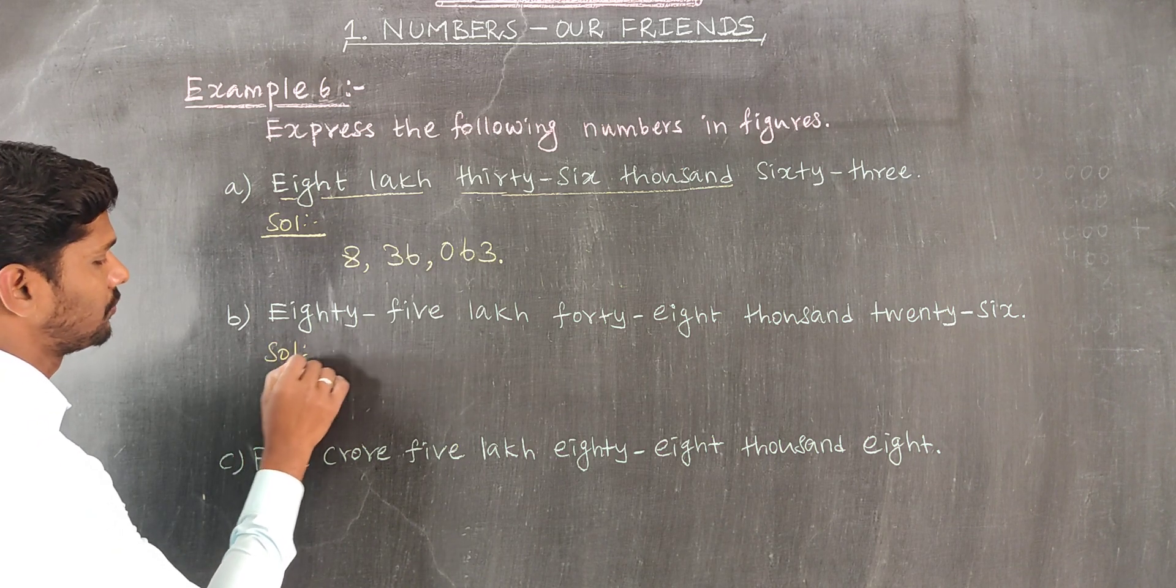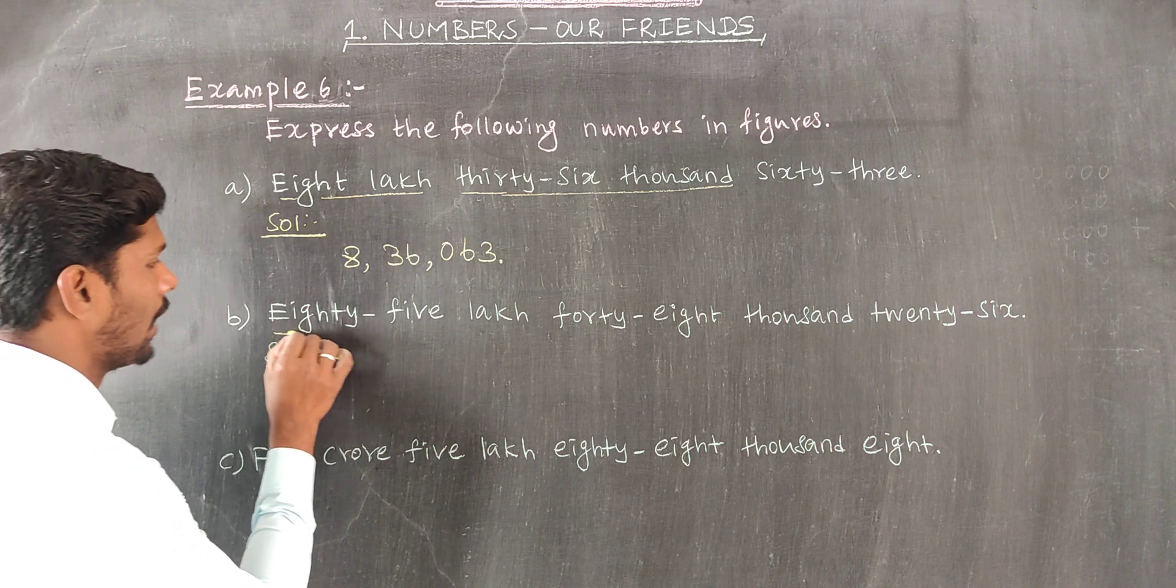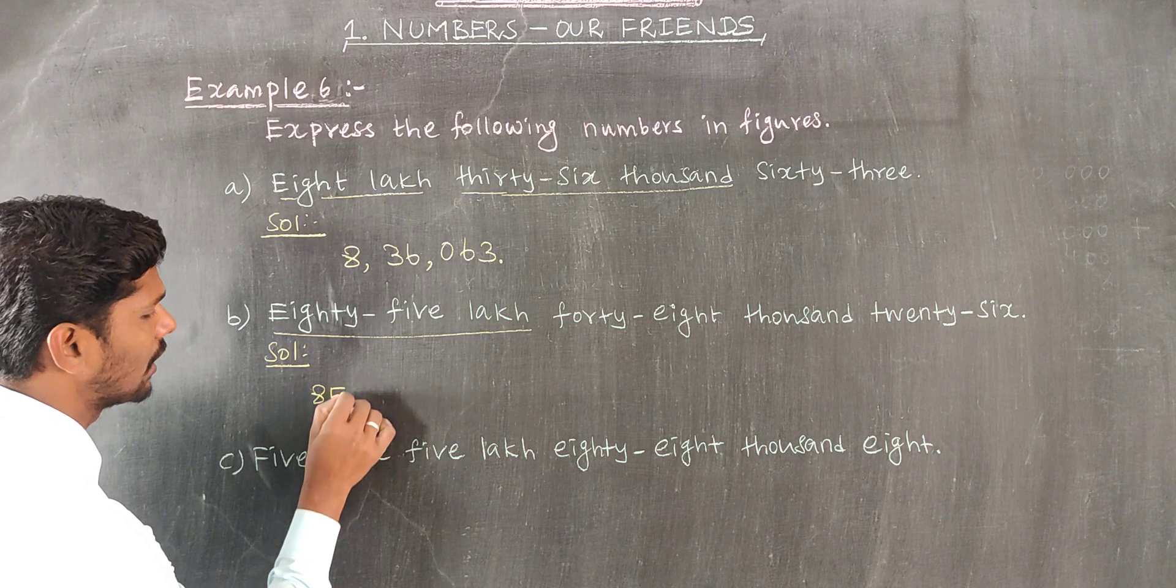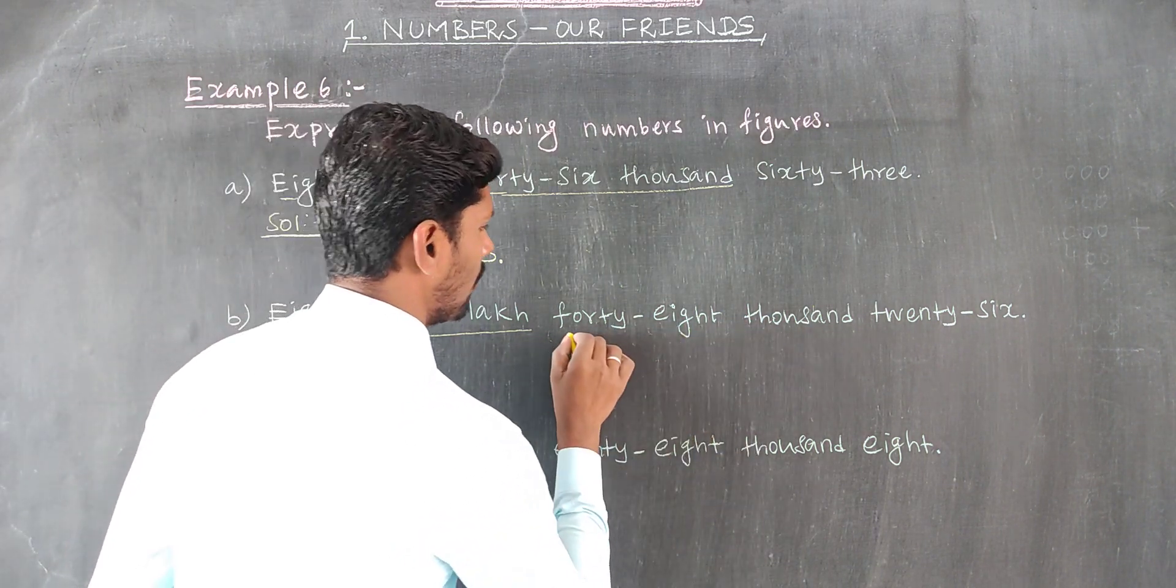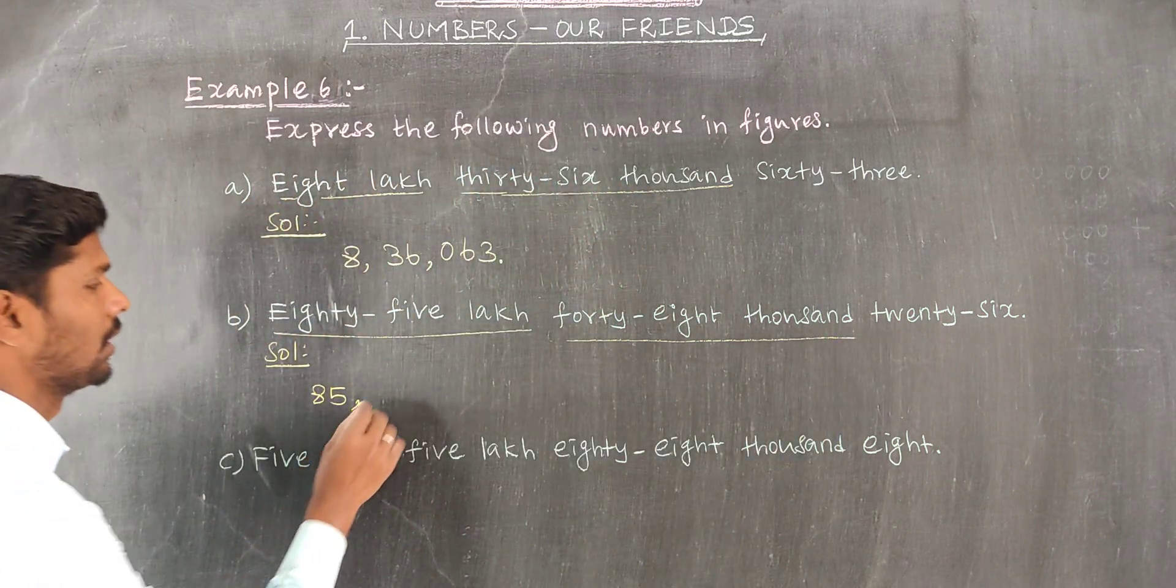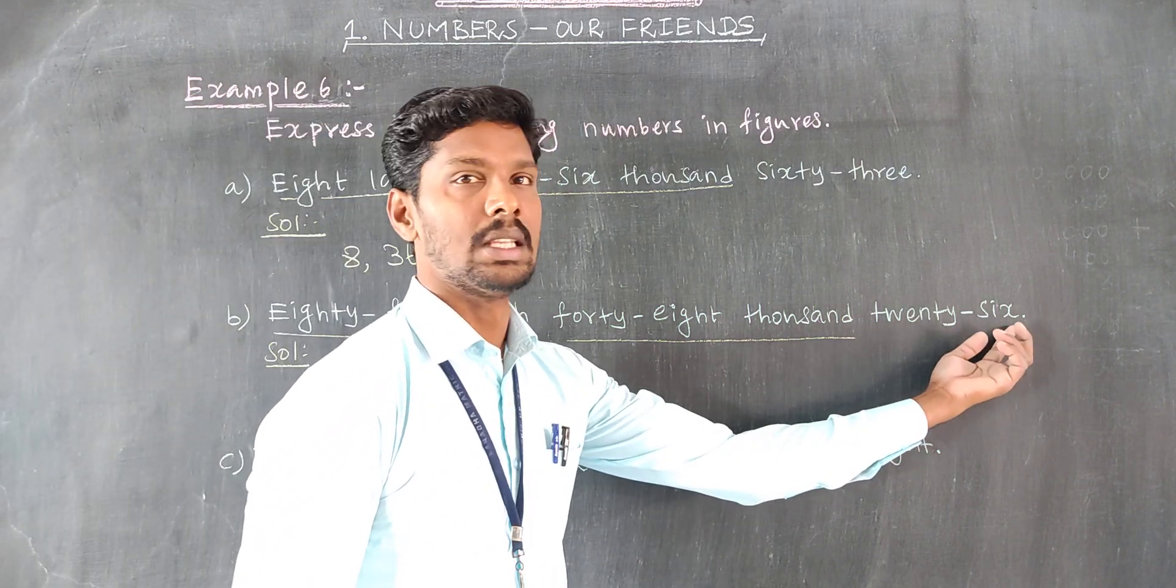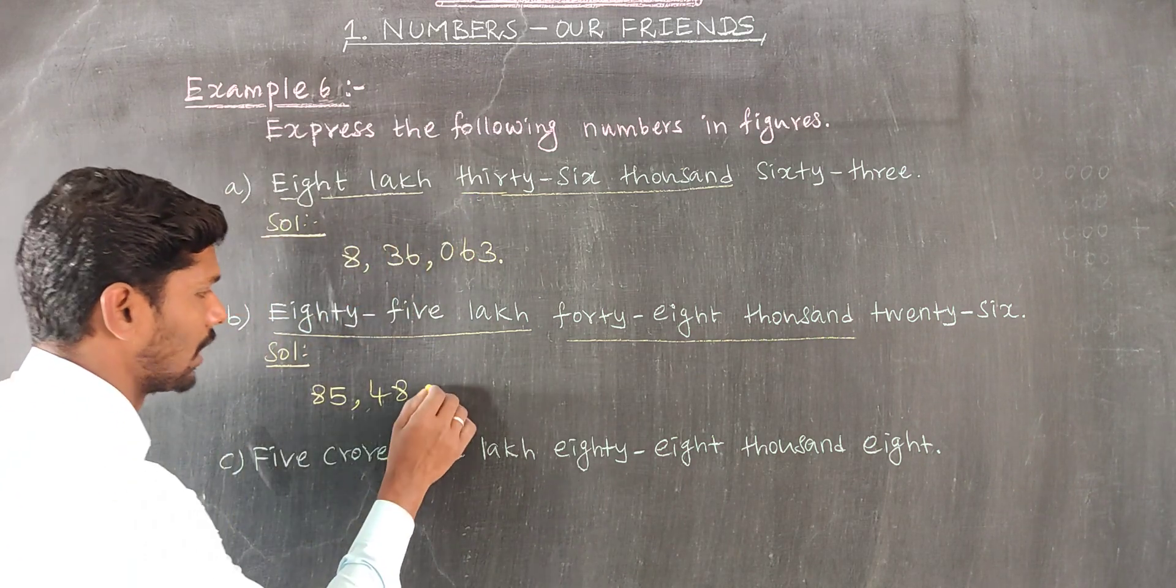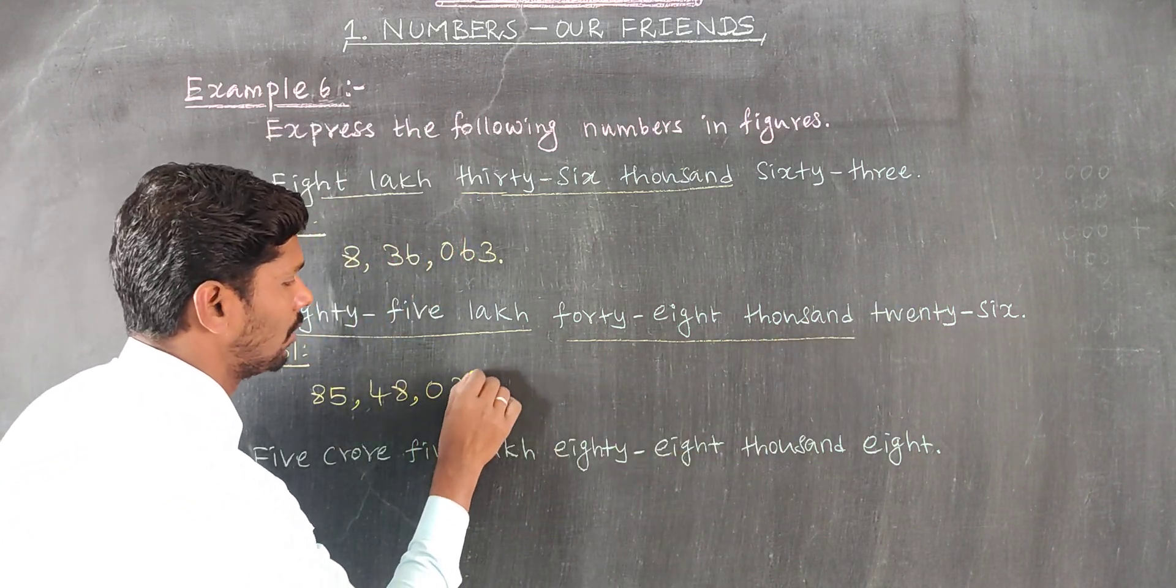Solution: Eighty-five lakh, that's 85,00,000; forty-three thousand, that's 43,000; and twenty-six. Now as you can see, this is 85,43,026. Okay?